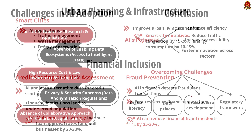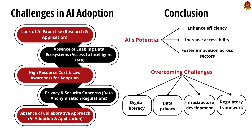Now we must mention the challenges in achieving the full potential of AI. First is the lack of broad-based expertise in research and application of AI. Second is the absence of an enabling data ecosystem and access to intelligent data. Third is the high resource cost and low awareness for adoption of AI. Fourth is privacy and security concerns, including lack of formal regulations and anonymization of data. Lastly, there is an absence of a collaborative approach to adoption and application of artificial intelligence.